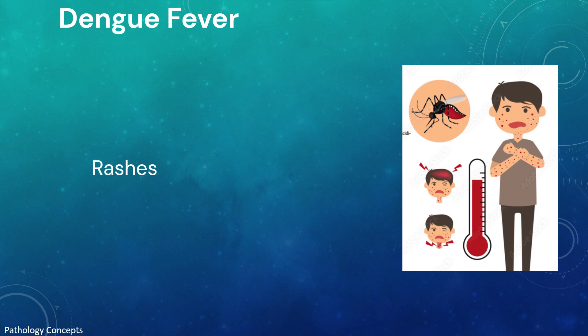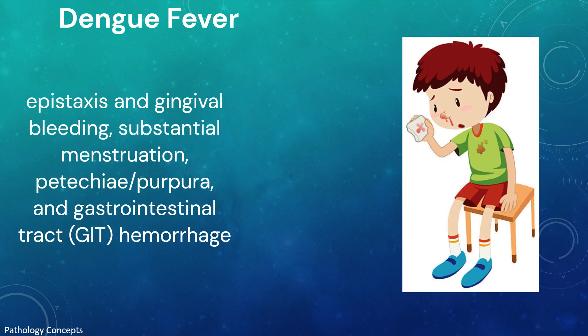The initial rash is a result of capillary dilatation and presents as a transient facial flushing, typically occurring before and during the first one to two days of fever. The second rash is seen three days to one week following the fever and presents as a symptomatic maculopapular or morbilliform eruption. Bleeding episodes including epistaxis, gingival bleeding, menorrhagia, petechiae, purpura, and gastrointestinal tract hemorrhage can also occur.